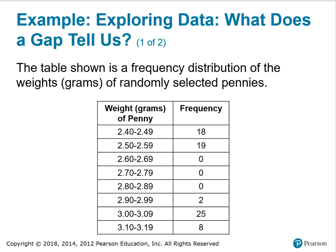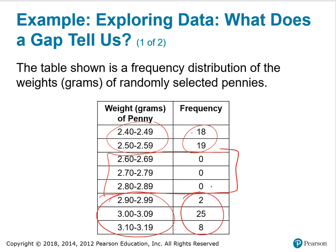Here's an example. The table shown is a frequency distribution of the weights in grams of randomly selected pennies. Notice that we have frequencies of 18 and 19 — so 37 pennies with a weight between 2.40 and 2.59 grams inclusive. Then there are no pennies with a weight in the next three classes, but once we get to 2.90, we see 35 pennies with a weight between 2.90 and 3.19 grams inclusive.